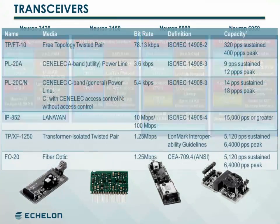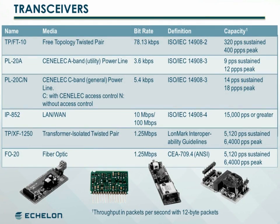Each Lawnworks device has a transceiver which matches the appropriate transfer media or communications channel. The chart lists some common Lawnworks communication channel types. Transceivers simplify the development of interoperable Lawnworks devices and are available for a variety of communications media and topologies, with the most common types being free topology twisted pair and power line.